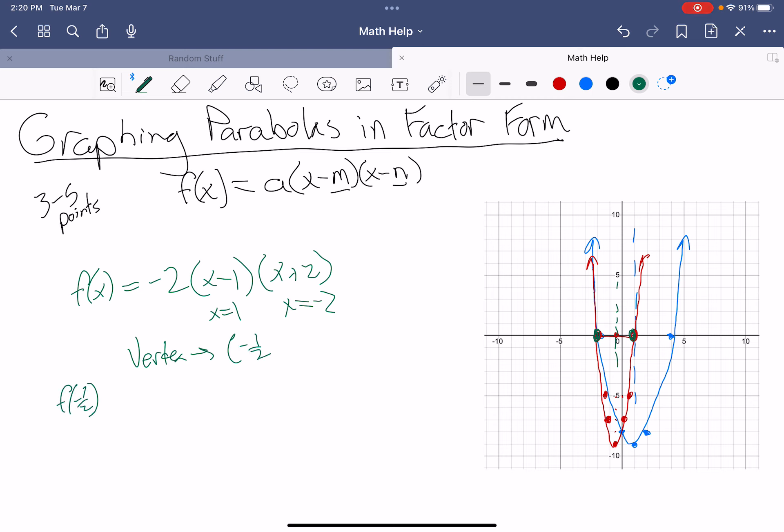I've got to plug this in. f of negative 1 half is negative 2 times the quantity—well, we already kind of did this. We know that this is going to be negative 3 over 2, and this one's also going to be 3 over 2. Now only one of the 2s is going to cancel out. Here we're going to get a positive value because we have those two negatives multiplying, and we're going to have 9 over 2. So negative 1 half, 9 over 2, which is 4.5, roughly right there.